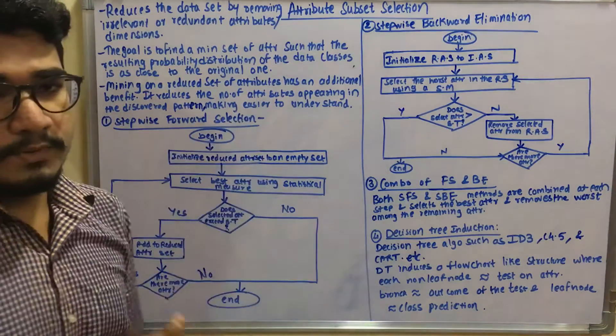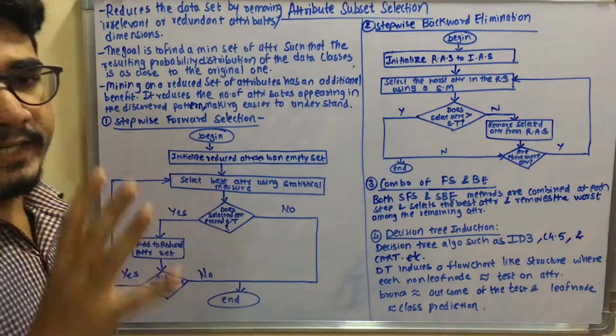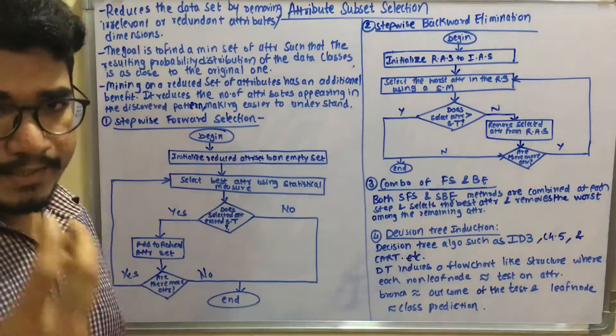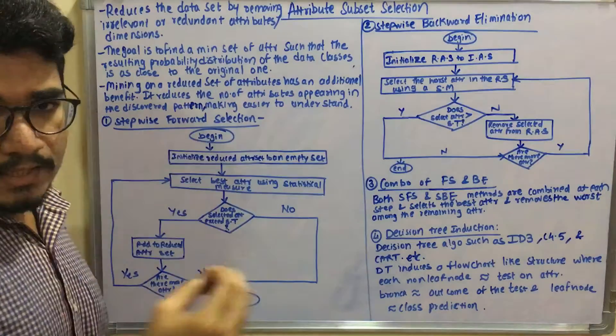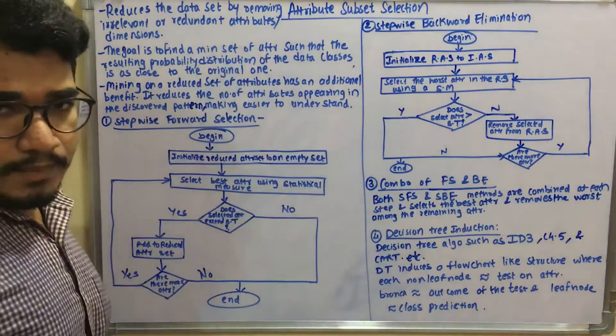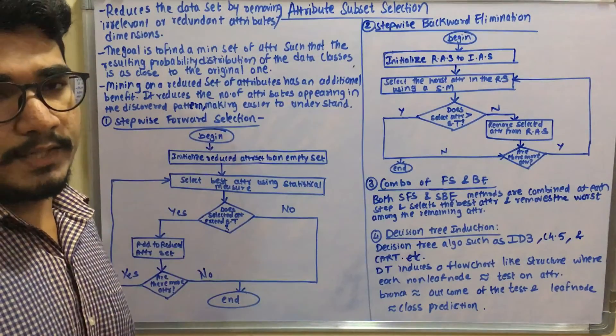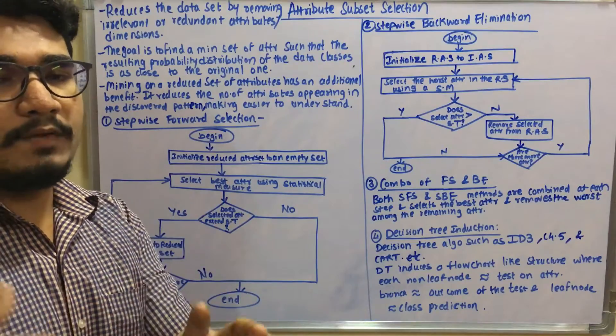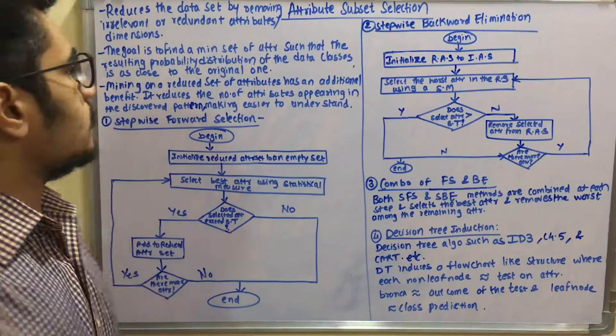So let's look at what attribute subset selection does. First of all, it reduces the dataset by removing the irrelevant. It identifies the irrelevant or redundant attributes or dimensions in a data cube, and then tries to fit to a particular level so it can be fed to the data mining system.